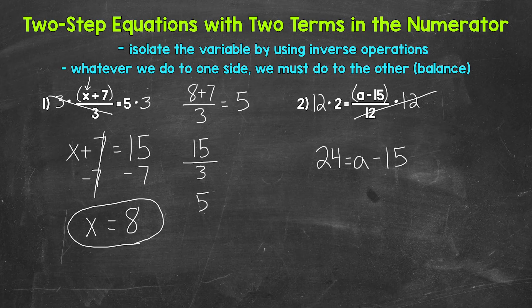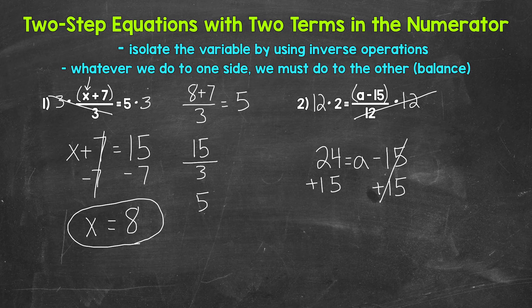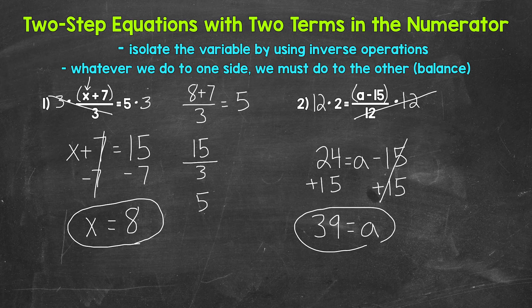We are subtracting 15 from a, so we need to undo that subtraction. The inverse of subtraction is addition, so let's add 15 to both sides. On the right side, subtracting 15 and adding 15 cancels out, so a is isolated. On the left side, 24 plus 15 gives us 39. So a equals 39.